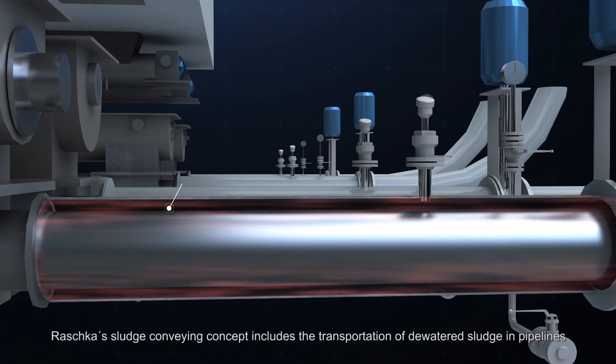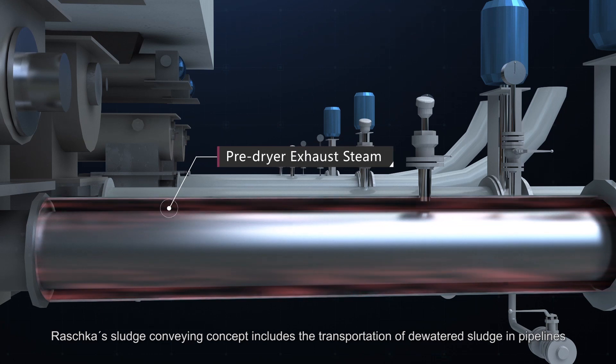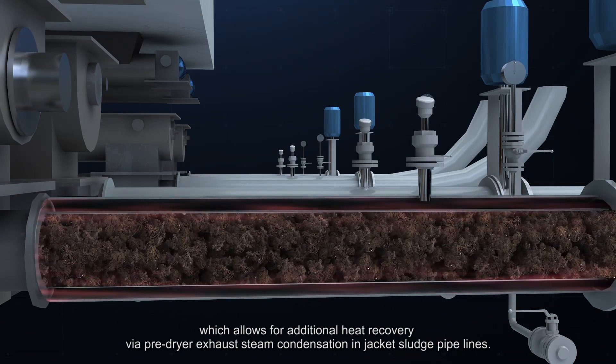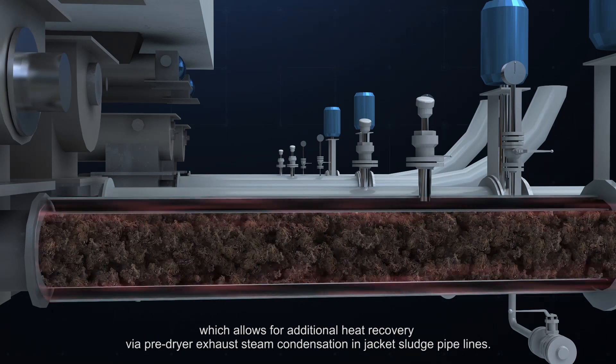Raschke's sludge conveying concept includes the transportation of de-watered sludge in pipelines, which allows for additional heat recovery via pre-dryer exhaust steam condensation in jacket sludge pipelines.